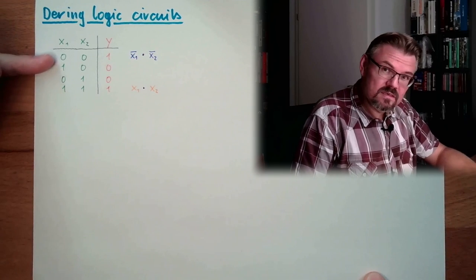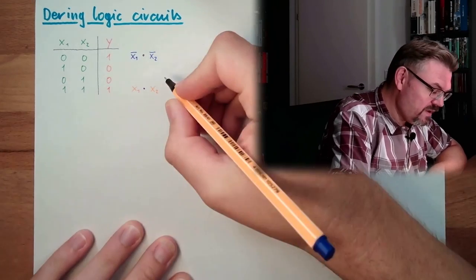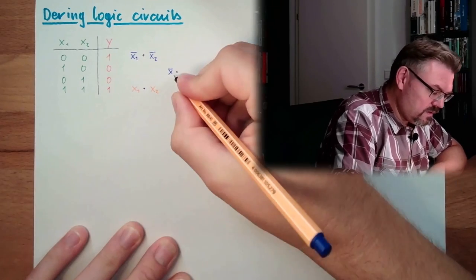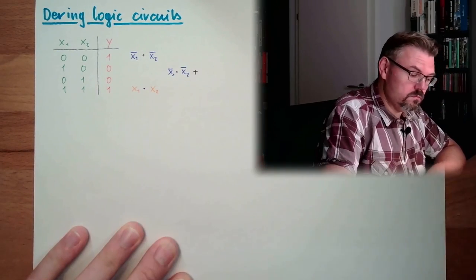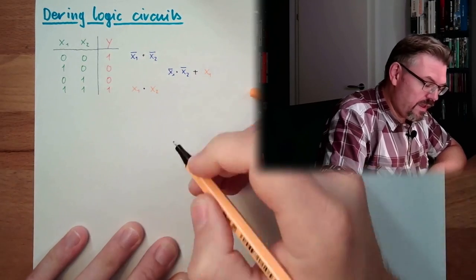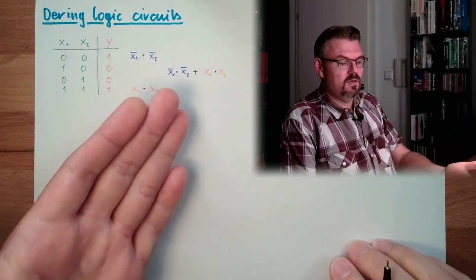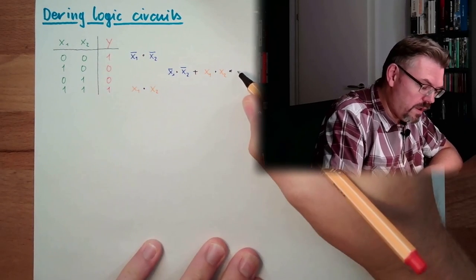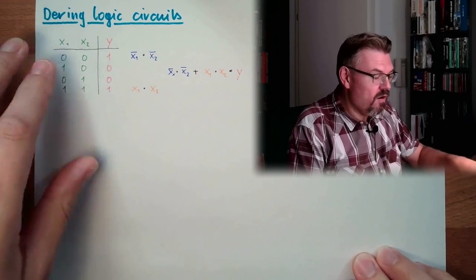And it's either this or this. Or, there it is already. So I have not x1 and not x2. And now OR. And here this was the orange cluster. x1 and x2. And this equals y. This is the boolean algebra of this table of truth.